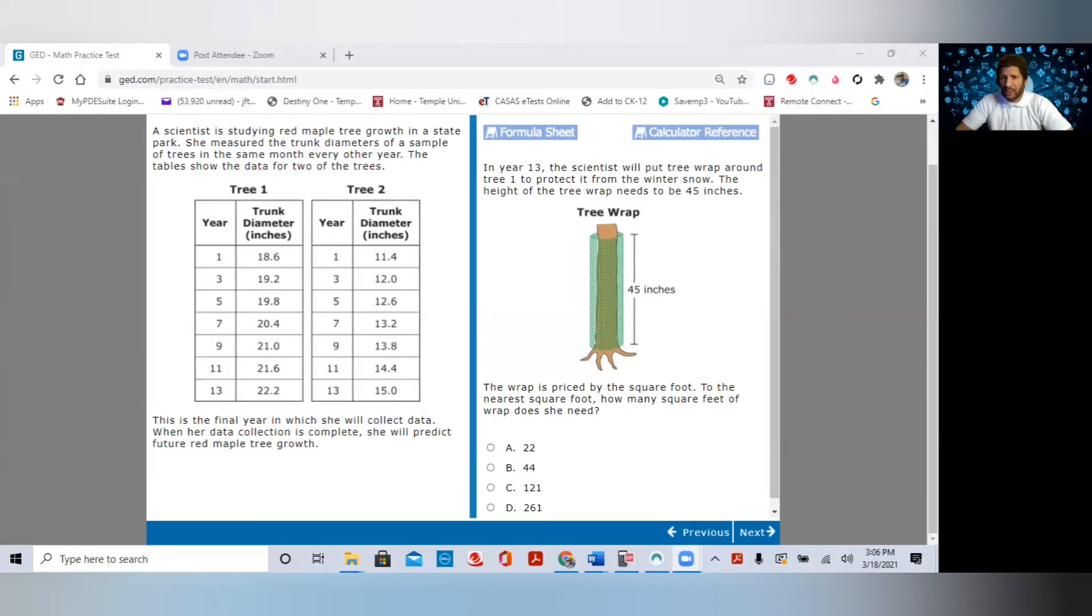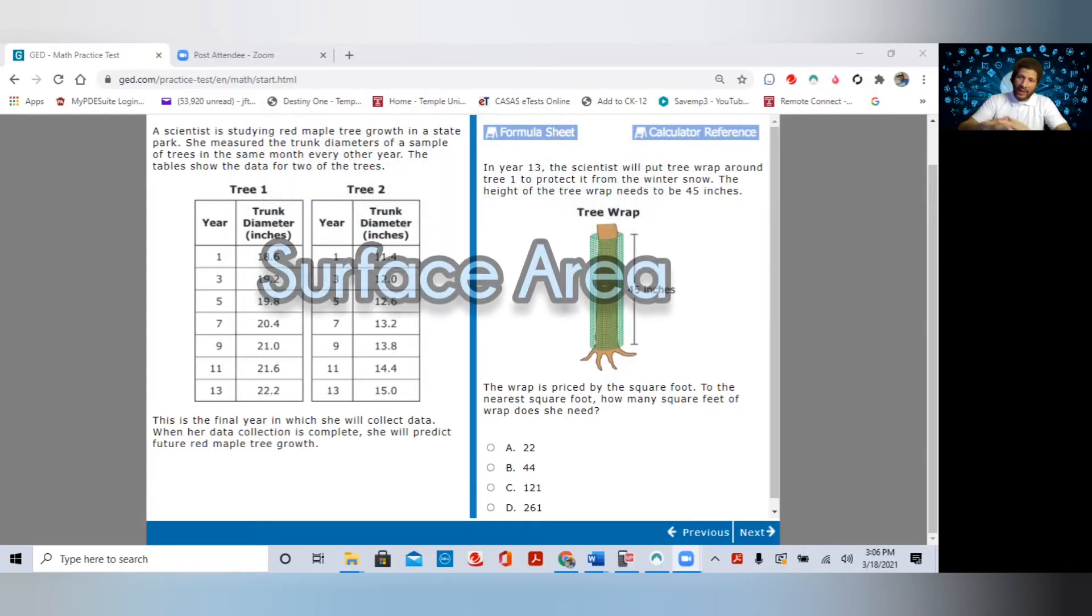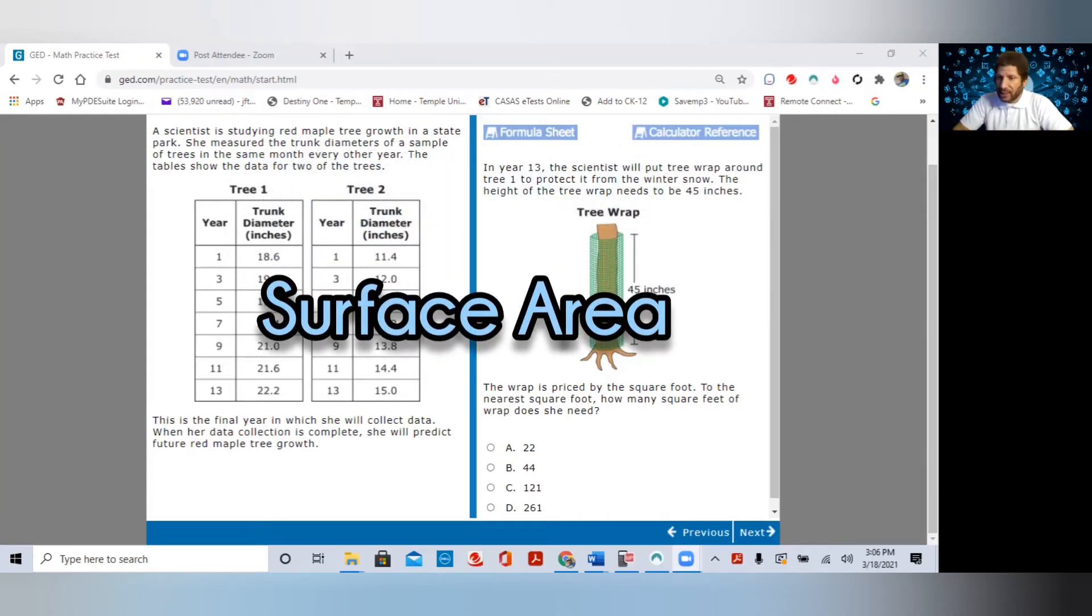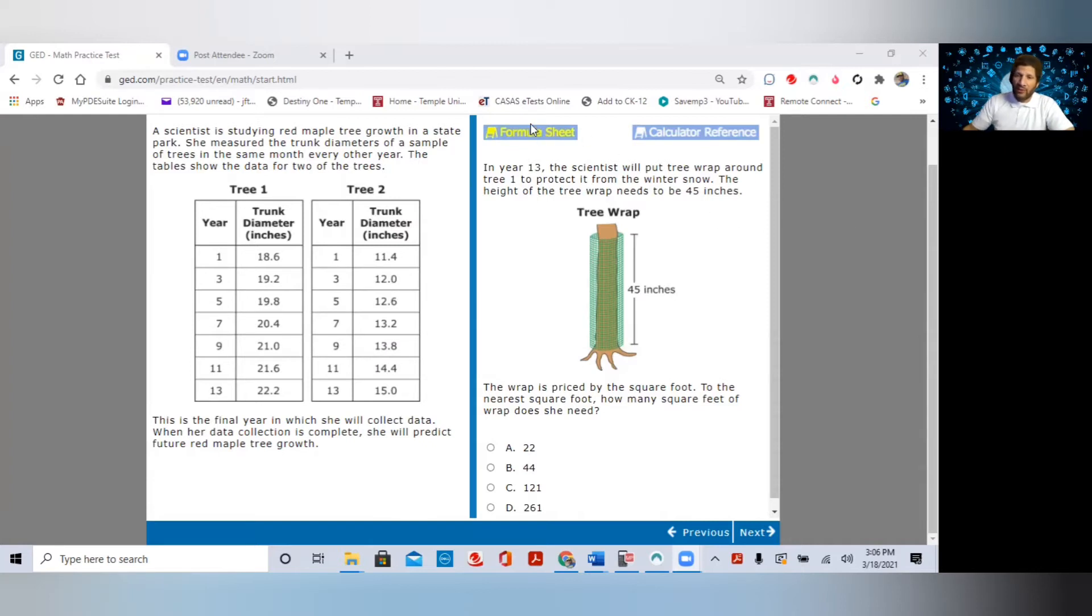In year 13, the scientist will put a tree wrap around tree one to protect it from the winter snow. The height of the tree wrap needs to be 45 inches. The wrap is priced per square foot. To the nearest square foot, how many square feet of wrap does she need? It's going around the tree. So we know that surface area. So if you look at the shape, it looks like a cylinder. So first of all, let's get our formula for the surface area of a cylinder.